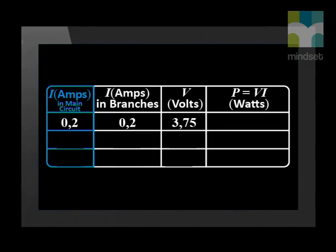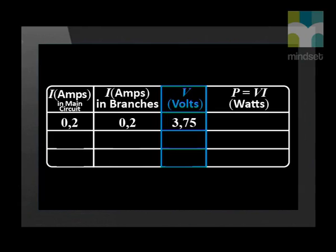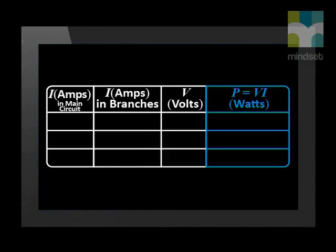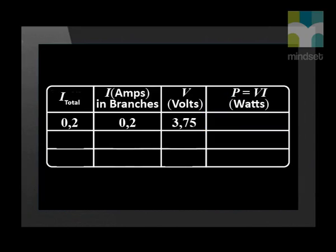There are two columns for the current because we will measure the total current in the circuit as well as the current in each branch. There are also columns for the potential difference and for the calculation of power. We recall that we can calculate power by multiplying the potential difference, V, by the current, I. Let's fill in our first values in the table.